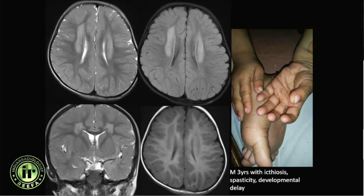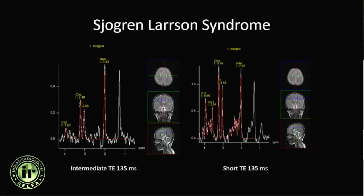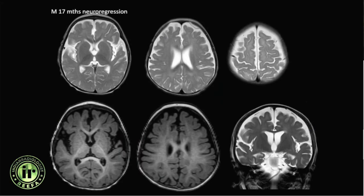A three-year-old male with dryness and ichthyosis of the hands, spasticity, and delayed development showed non-specific periventricular T2 hyperintensity on MRI — very difficult to make the diagnosis from MRI alone. However, spectroscopy showed prominent lipid peaks, which confirmed the diagnosis. Prominent lipid peaks with ichthyosis and delayed development is Sjögren-Larsson syndrome.